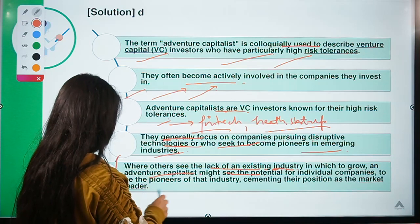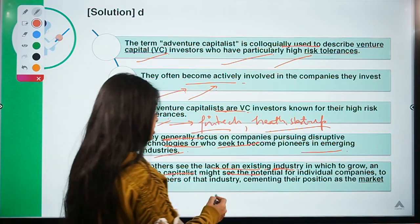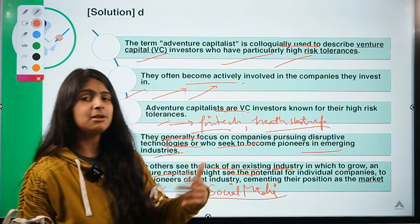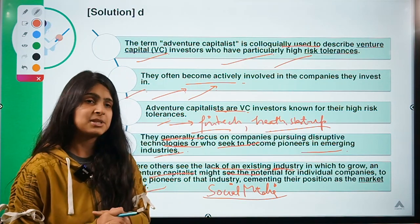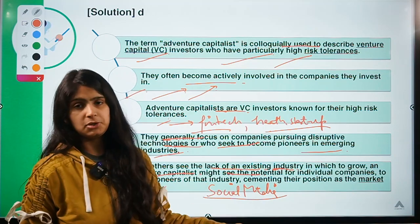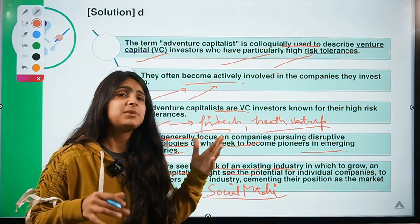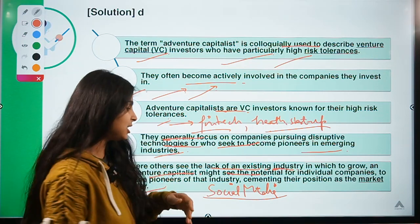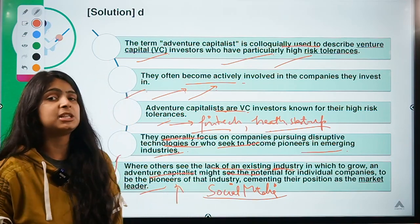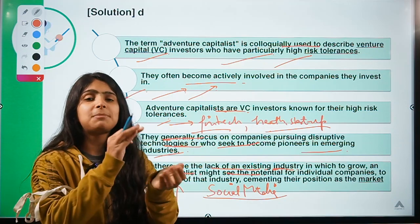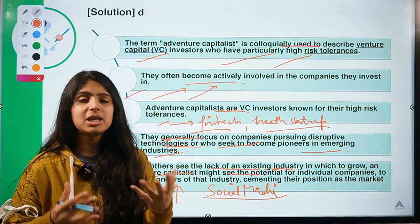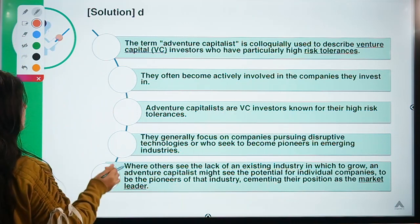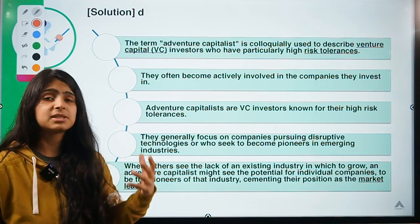They see the potential for individual companies to become market leaders. For example, social media was completely unheard of 10 to 15 years ago. Investors who put money into Facebook or Google when they launched were taking very high risks. That is why adventure capitalists identify emerging industries and particular companies that can set benchmarks for a growing industry.